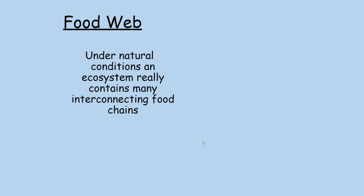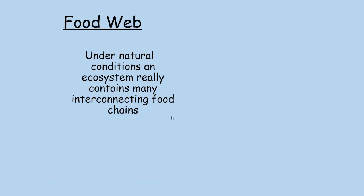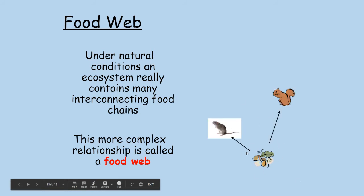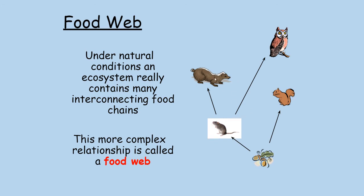Food webs are essentially the same thing but more realistic. Instead of saying a rabbit only eats grass, we observe what they actually eat and represent that in a diagram. Food webs are much more complicated — they interconnect different food chains together. For example, acorns might have an arrow going to a rat, to a squirrel, and to a wood pigeon. That squirrel might be eaten by both an owl and a weasel — you can have as many arrows coming off as needed.